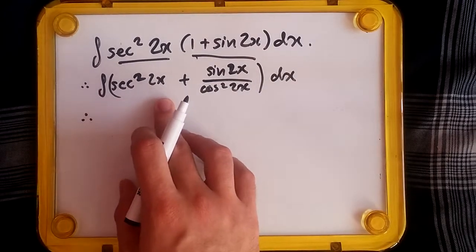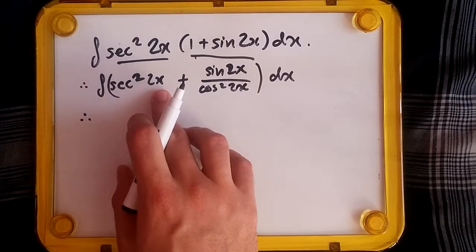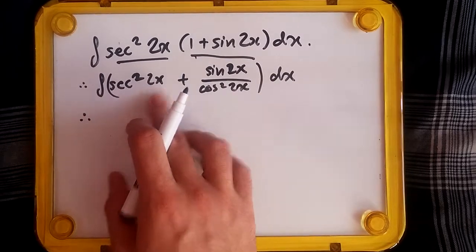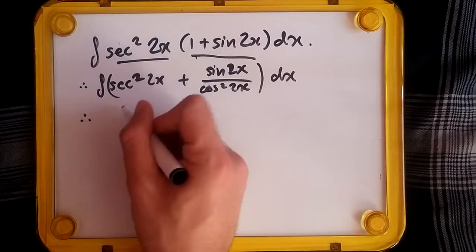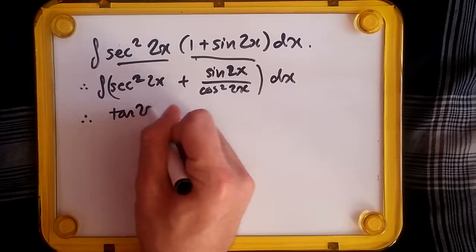you have a 2 inside the 2x. When we differentiate that term, we're left with 2, which we put underneath. So using the normal rule, integrating this gives us tan(2x), and the derivative of 2x is 2, so we get tan(2x)/2.